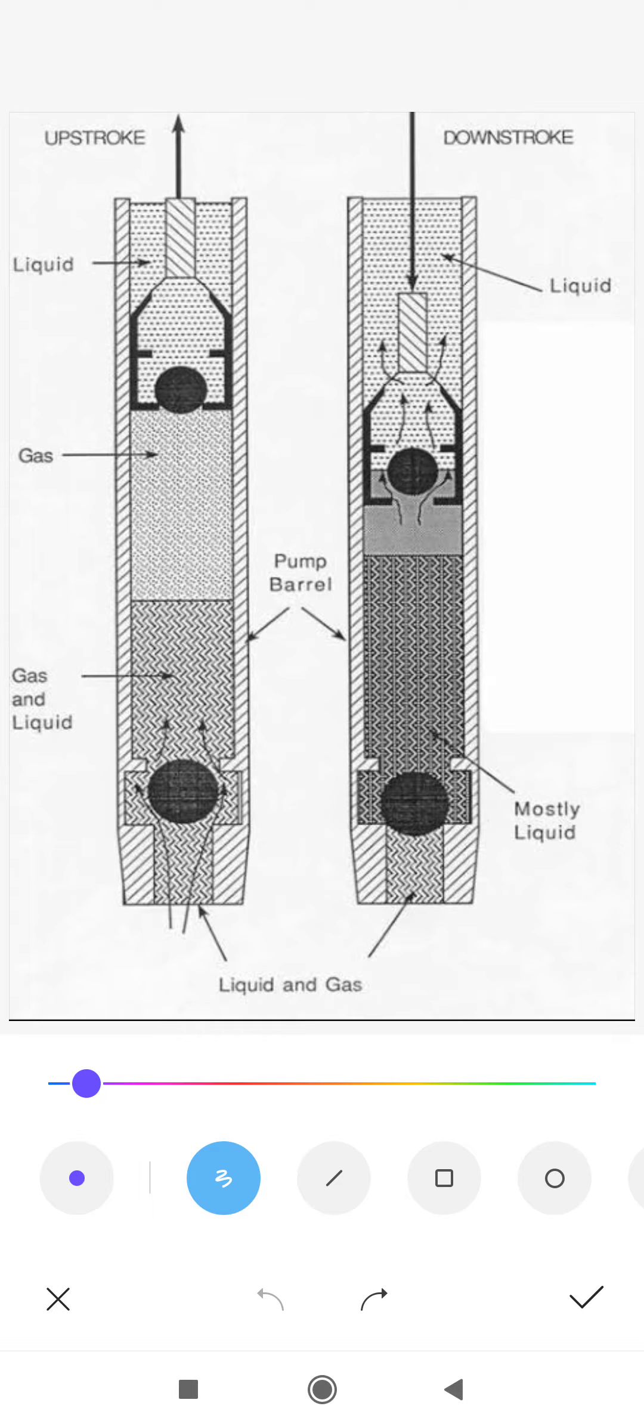Let's discuss the subsurface pump of the SRP. This is the illustration or diagram of the subsurface pump of SRP. Here we can see the different parts of the SRP pump. This SRP pump is installed downward.